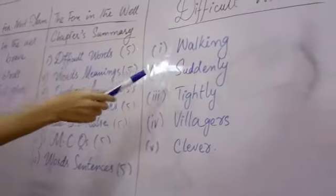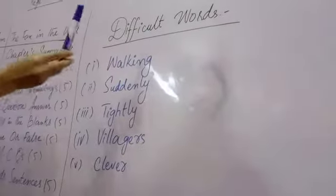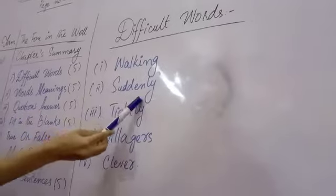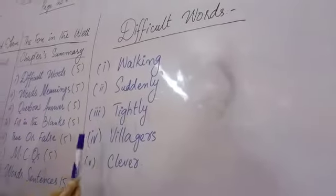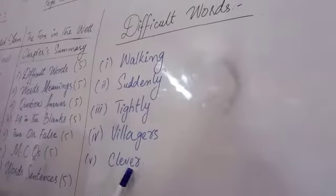Now turn your page. First, we have difficult words. Number 1, walking. Number 2, suddenly. Number 3, tightly. Number 4, villagers. And last one is clever. This is your today's homework.